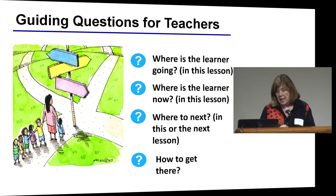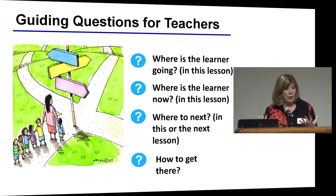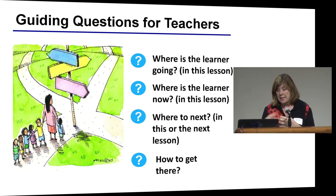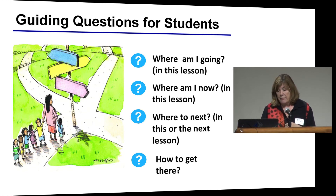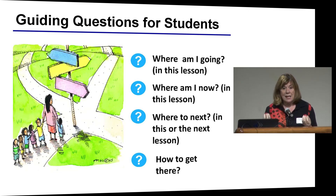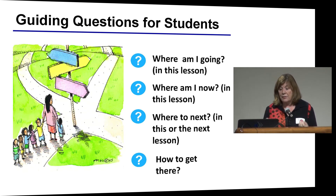These are four guiding questions for teachers as they think about formative assessment. First: where is the learner going in this lesson — what are the goals, what's the success criteria? Second: where is the learner now — the evidence elicited at particular points in the lesson. Third: where does the student need to go next? And fourth: how to get there. Because students and teachers are equal partners in this process, and the only people who can do the learning are the learners — learning is the property of the learner — these questions are equally significant for students as they are learning.